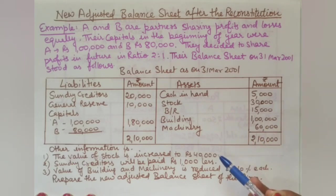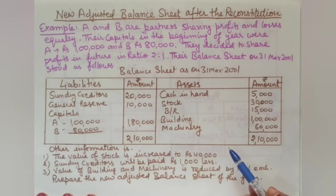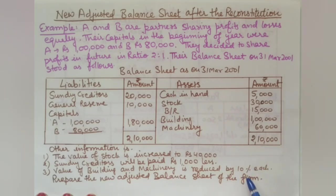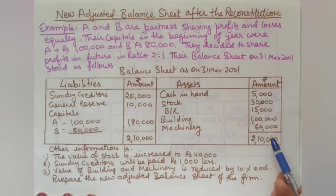The reduction in building value of 10,000 rupees is recorded on the debit side of the revaluation account. Machinery was 60,000 rupees; 10% of 60,000 is 6,000 rupees. This 6,000 reduction is recorded in the revaluation account, and the new value of machinery becomes 54,000 rupees.